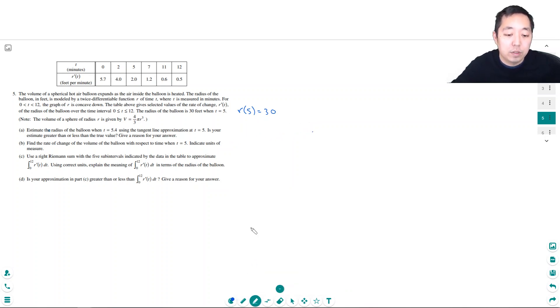So we're going to do a line, right? y minus y naught equals m times x minus x naught, or in this case it's t. So t minus t naught plus y naught. The slope is given by r prime at 5 because we're doing the tangent line at t equals 5 basically.